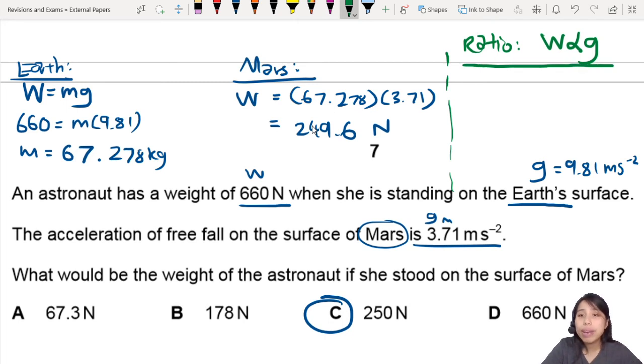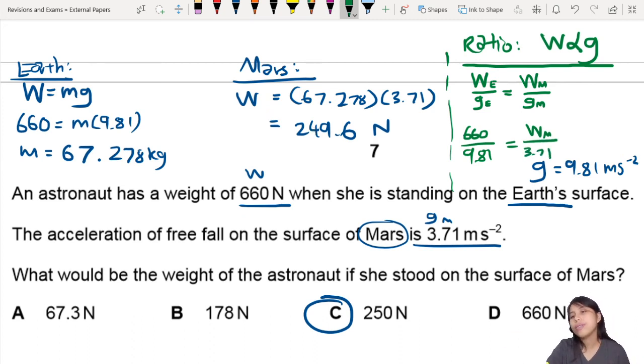So if you use this shortcut method, you know that this astronaut's mass is the same. Which means, the weight of this fellow on Earth over the gravitational constant on Earth is the same as weight on Mars and G of Mars. So you can put it all together and you say, 660 over 9.81 equals to WM, I'm trying to find that, divide by 3.71. That also works. This is another method you can do that, using ratios.